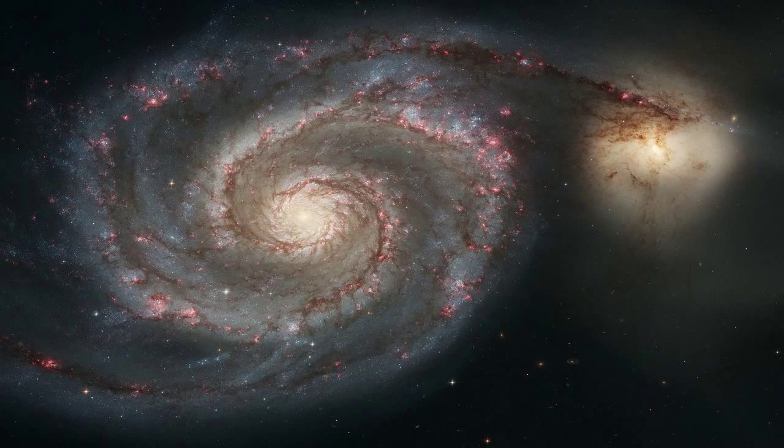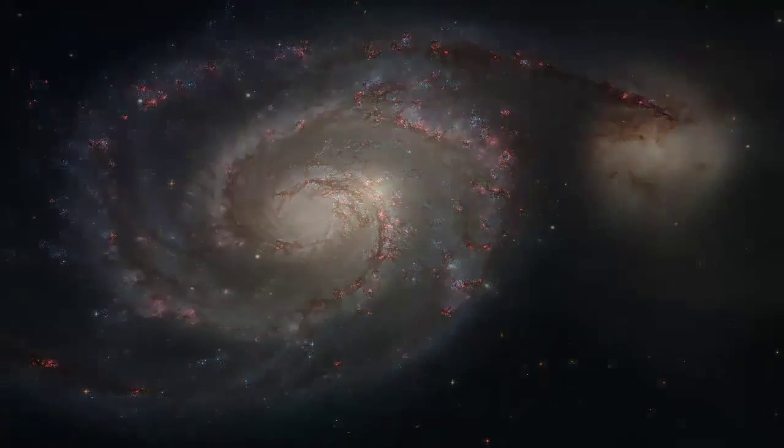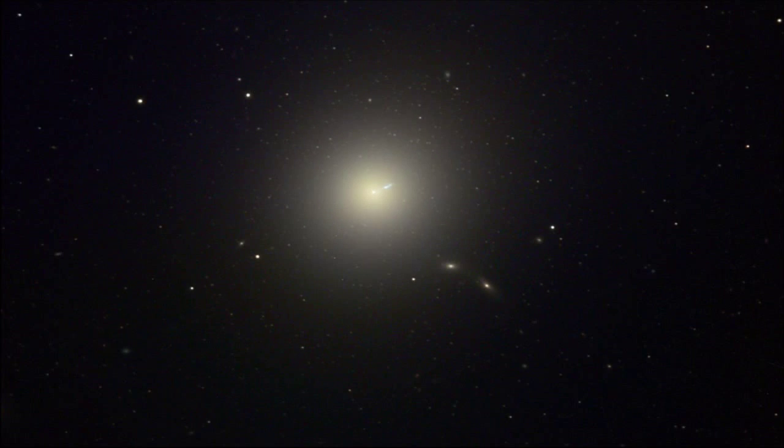Some, like the Whirlpool galaxy, have the same beautiful spiral shape as our own Milky Way, but there are others like the monstrous M87 galaxy, which are round or elliptical and featureless, but they contain more than a trillion stars.